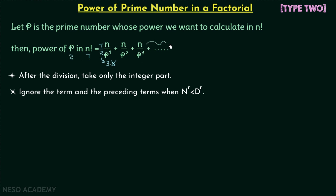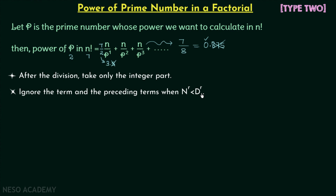Focus on the term n over p³: n is 7, p is 2, so we have 2³ which equals 8. The numerator is 7 and the denominator is 8 — numerator is less than the denominator — and the division gives 0.875. As per rule number 1, we select the integer part, which is 0. Adding 0 to the other terms does not affect the result. For n over p⁴ the integer part is also 0. So whenever the numerator is less than the denominator, the integer part is 0, and we can neglect that term and all preceding terms.